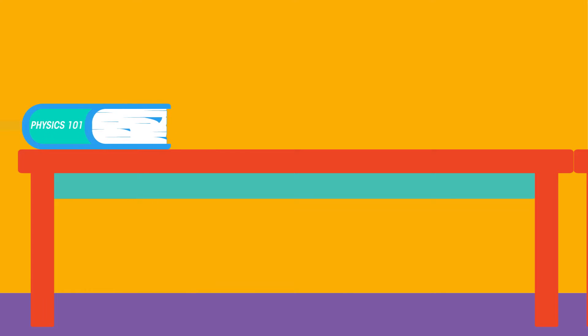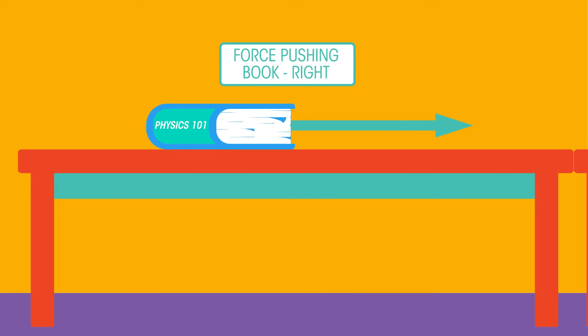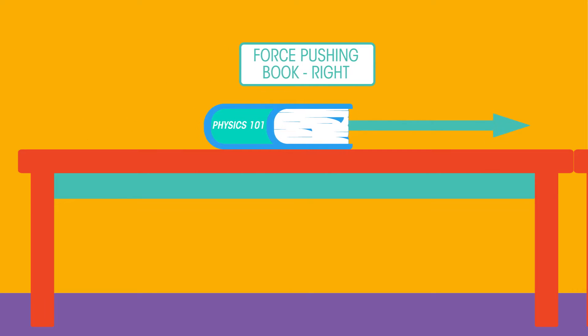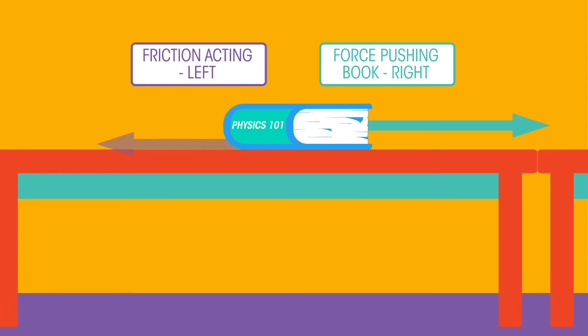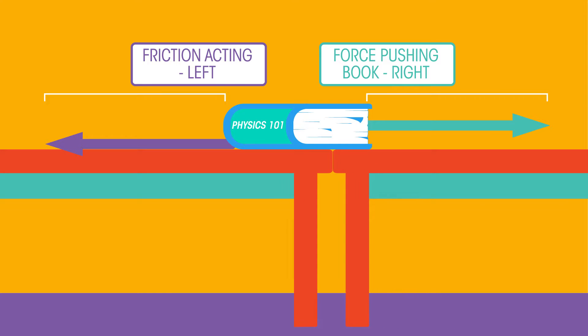Or pushing a book at constant speed across a table. The force pushing the book acts towards the right. The force of friction opposes this and acts towards the left. The arrow vectors are equal in length because the magnitude of these forces are equal.